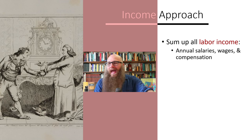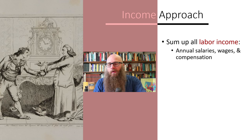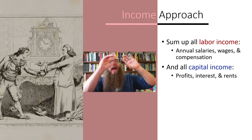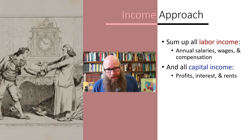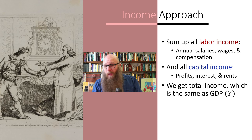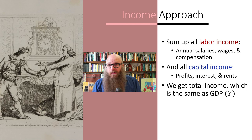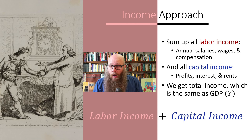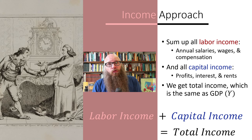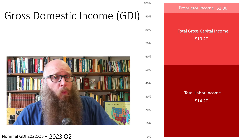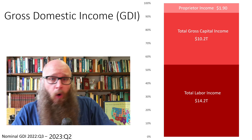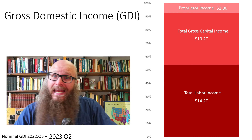Next, let's do the income approach. We're going to add up all the labor income — annual salaries, wages, compensation — and then add up all the capital income: profits, interest, rents. We get the total income, which is the same as the total production. All labor income plus all capital income equals total income. We call this gross domestic income.